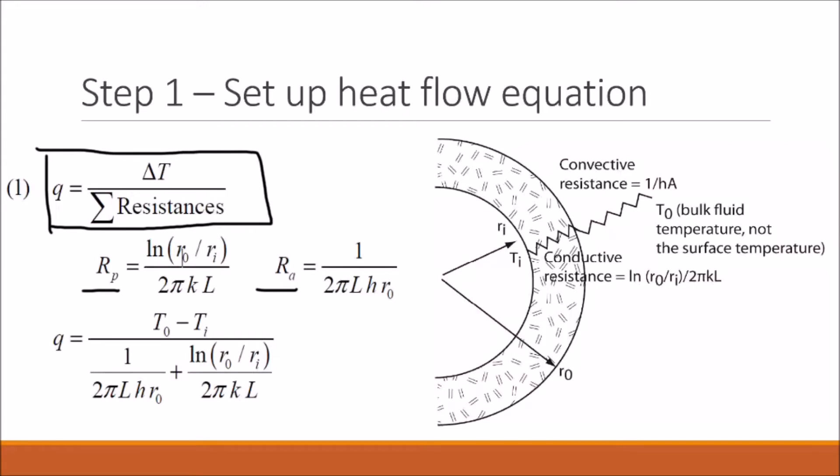For the pipe, we use our thermal resistance equation for a cylinder. For the convective resistance, we use our equation 1 over HA, where A is the outer surface area of the cylinder, given by 2πr₀ times the length of the cylinder.